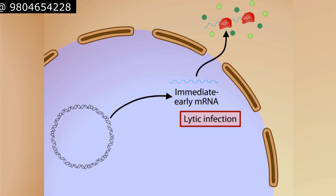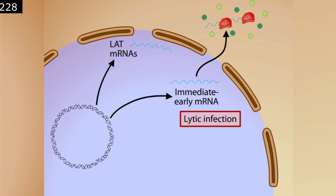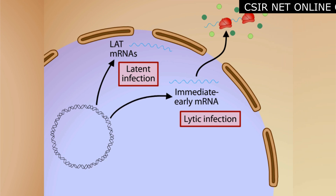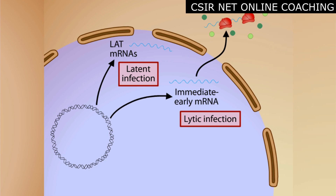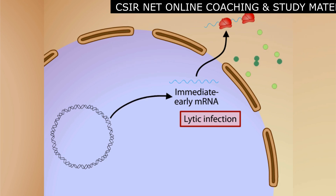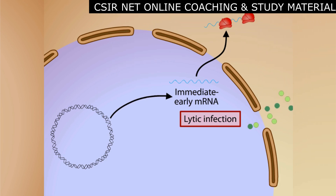In expressing these immediate early genes, the virus has entered a pathway called a lytic infection, in which a cascade of events culminates in the production of new virions. However, the virus could alternatively enter a pathway called a latent infection, in which genes called latency, or LAT genes, are transcribed and keep the cell from committing suicide and from producing new virions. In a latent infection, the DNA circle can persist within the cell for decades before switching to lytic infection.